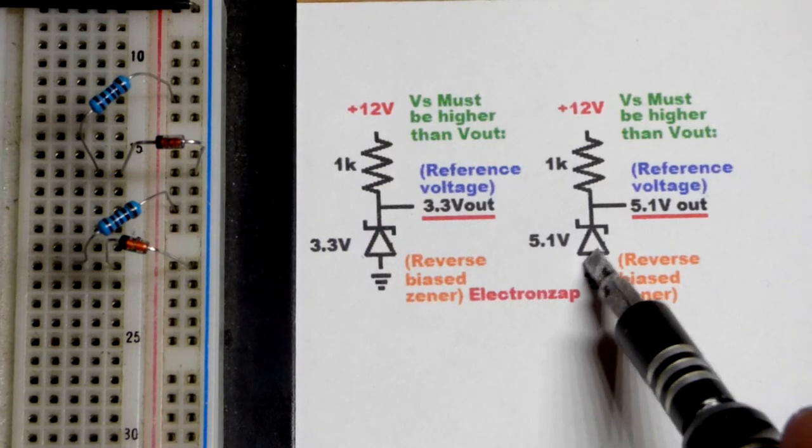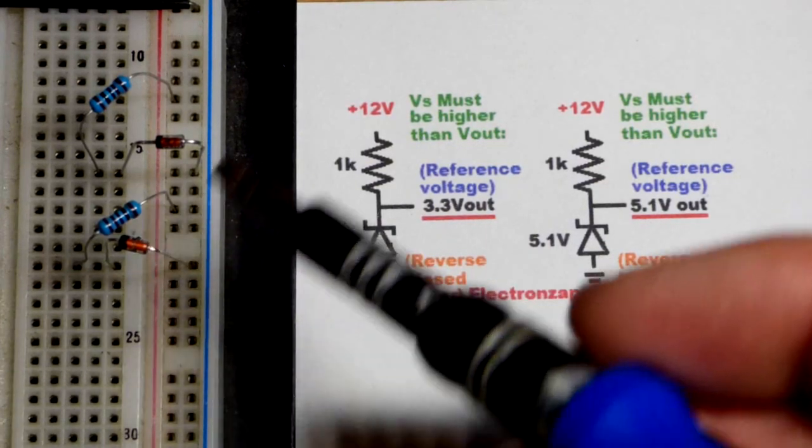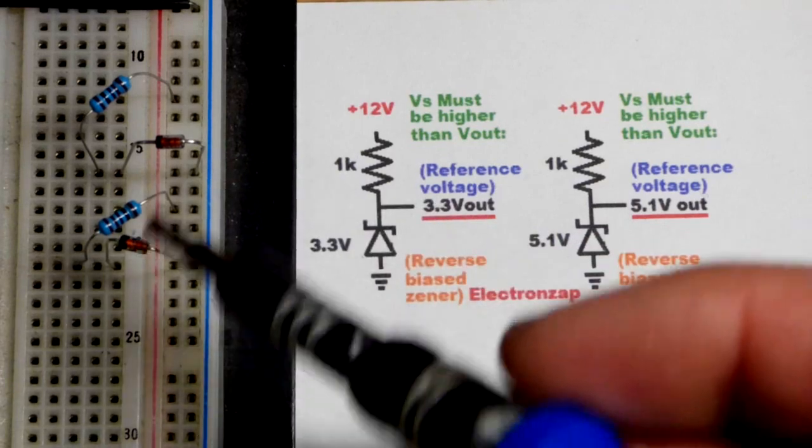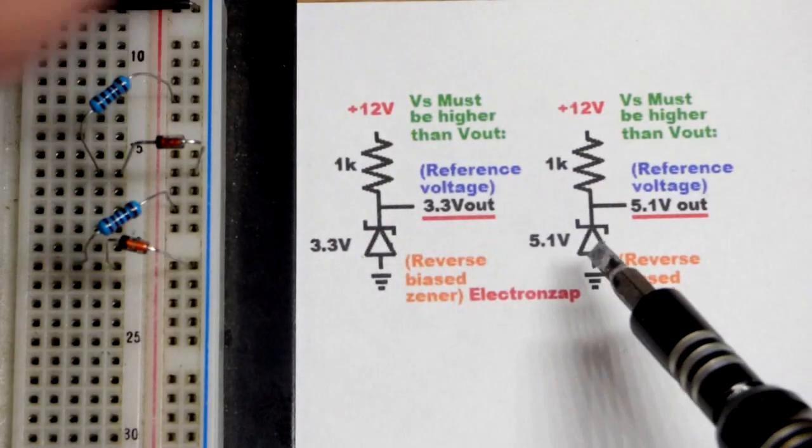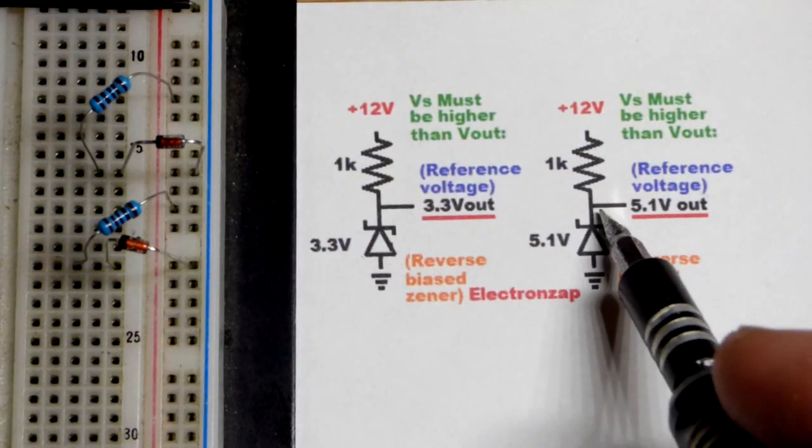And then you could just grab a 5.1 volt Zener diode. So the numbers are really small on there. I'm not going to show it but you can read it on there if you have a loupe like this. And so again we're not going to do that in this video though.